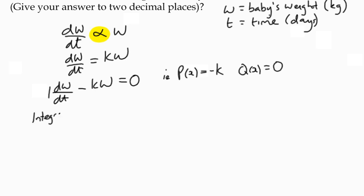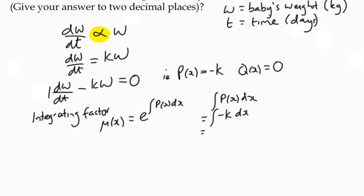Let's find the integrating factor. μ of x equals e to the power of the integral of p of x dx. Actually, I want to make it t. So t is time and everything's in time, yeah. dw/dt, so let's make everything t here. μ of t, let's go for it.